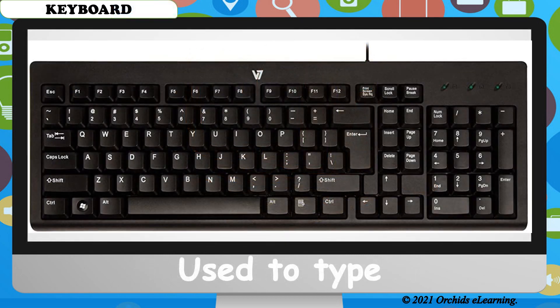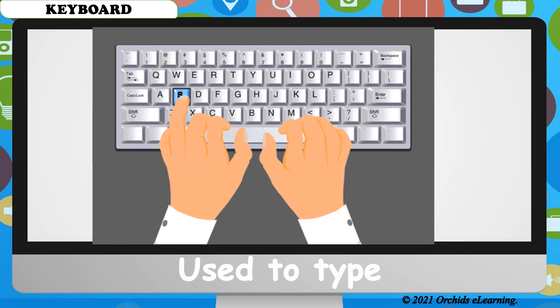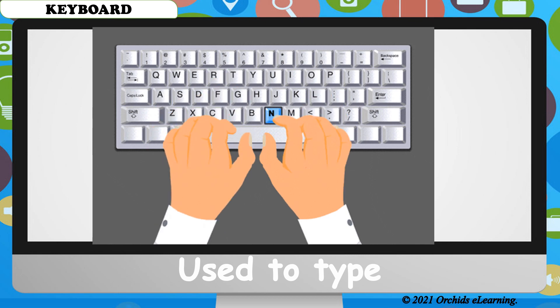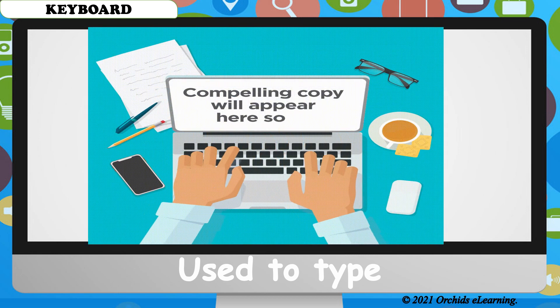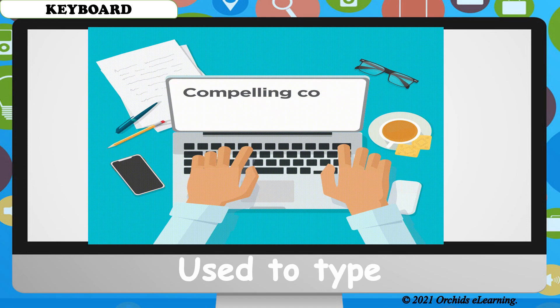A computer keyboard has many buttons. These buttons are called keys. You press the keys to type numbers and letters. This is called typing.